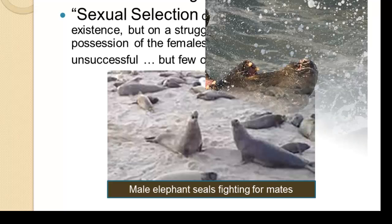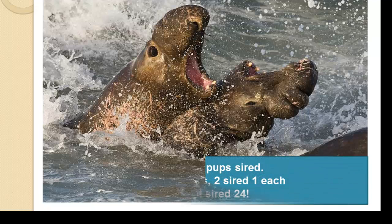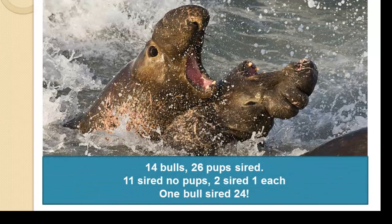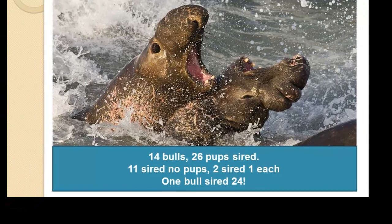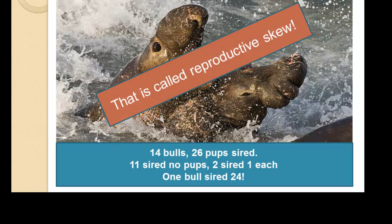Here are some male elephant seals fighting for mates — this is what we most often associate with sexual selection from nature documentaries. In a study of a group of male elephant seals, with 14 bulls in one season, 26 pups were sired: 11 bulls sired no pups at all, two sired just one each, and one bull sired 24 of the 26 pups.